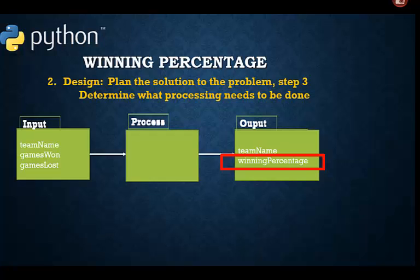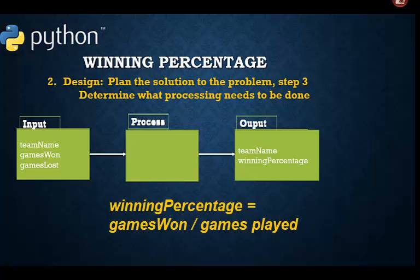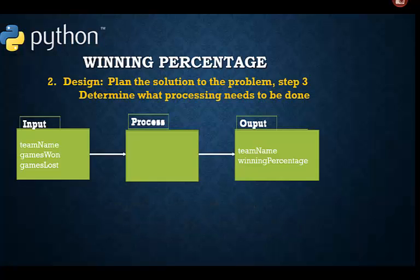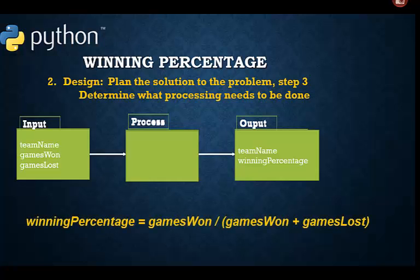Here is a critical question. Given the inputs number of games won and number of games lost, do we have enough information to produce the required output winning percentage? Yes, we do. We need to write the formula to compute the winning percentage based on games won divided by games played. We didn't get games played as an input, but we did get games won and games lost. We can add these together to get the number of games played.